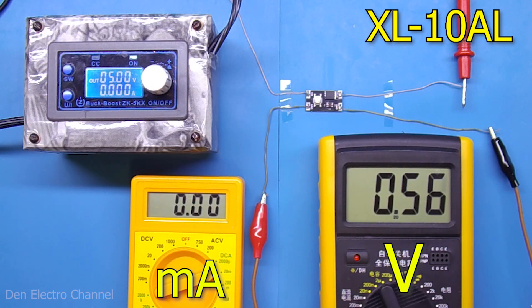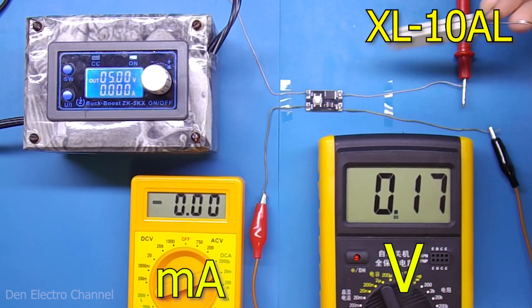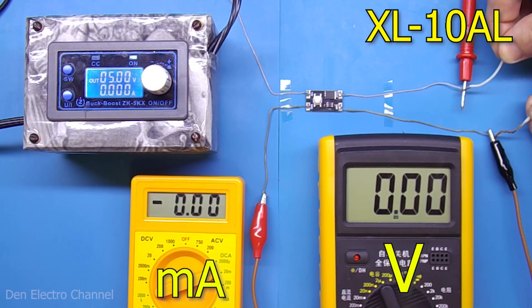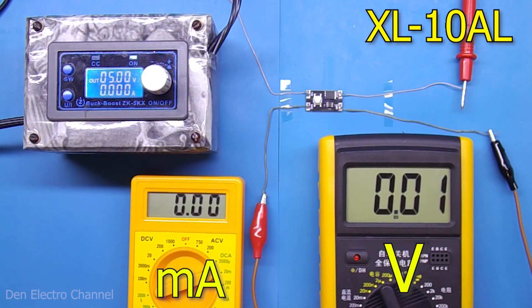Then I wanted to see if the current consumption of the module would remain the same in the disconnected state if a load is connected to it. To do this, I took a resistor and connected it to the output. The input current did not increase. This means that the circuit is completely disabled and the transistor is securely locked. Even in the OFF state, no current flows to the load.